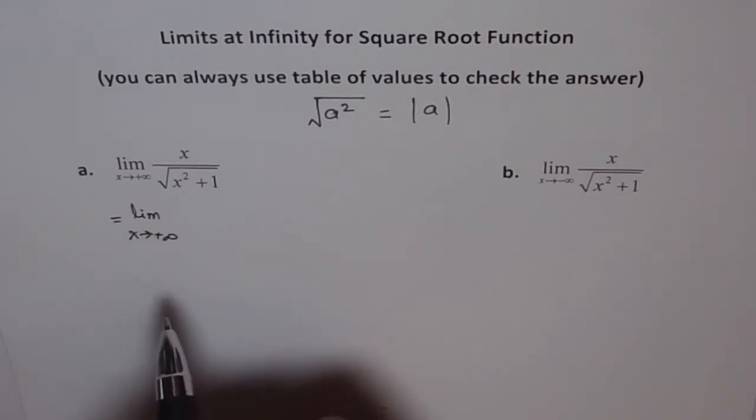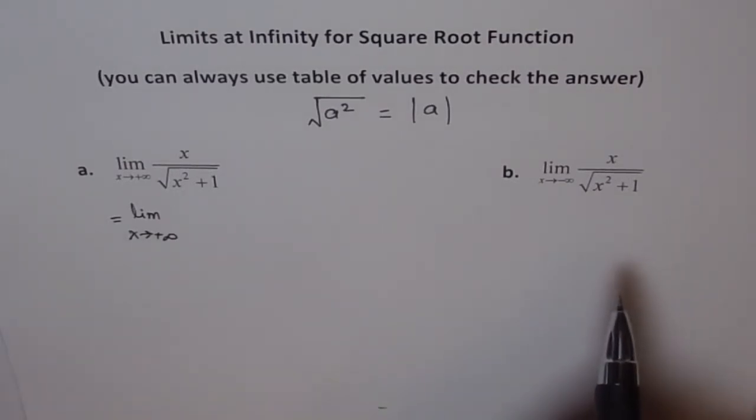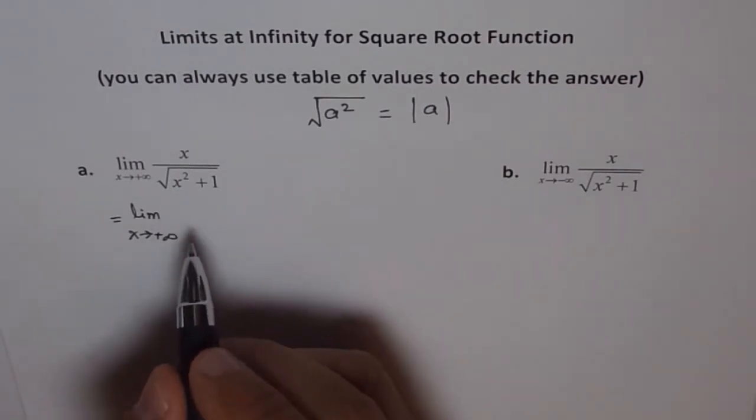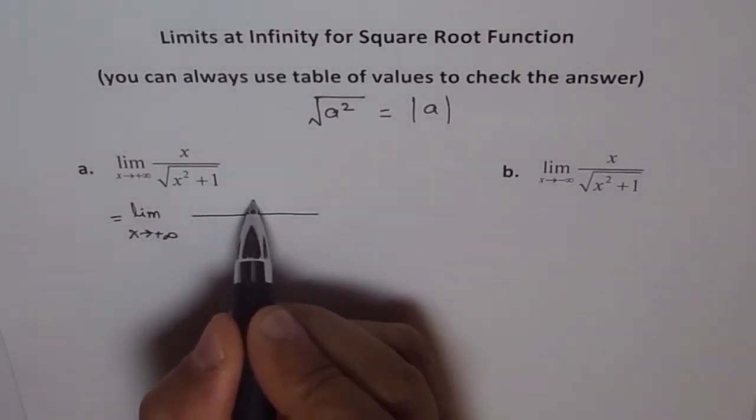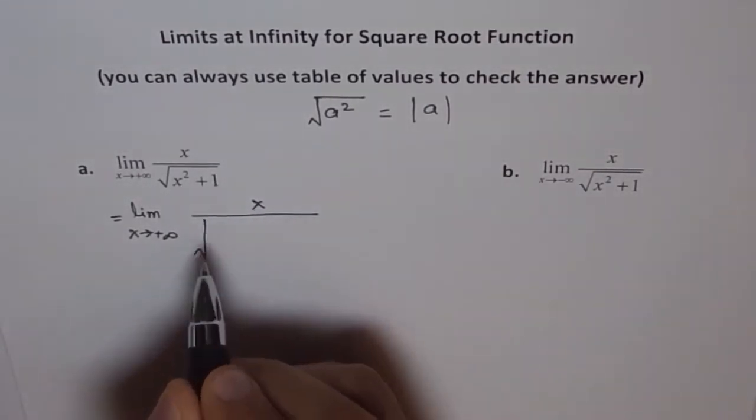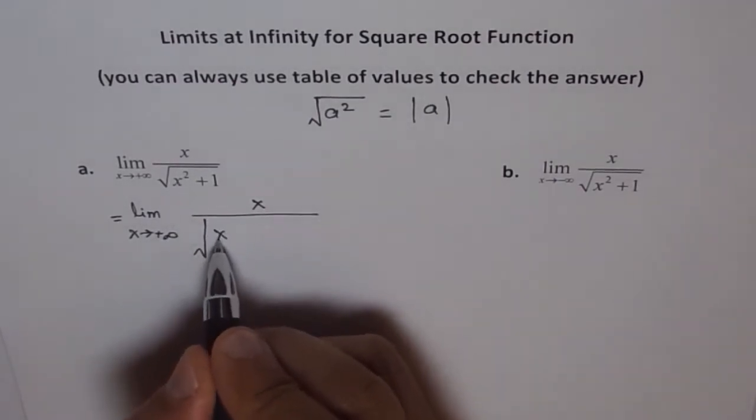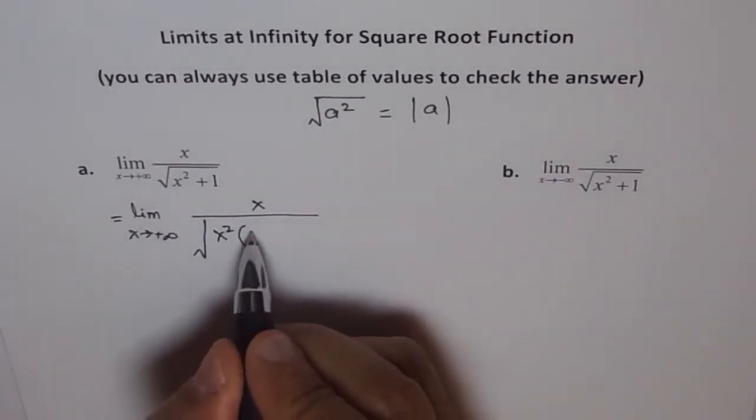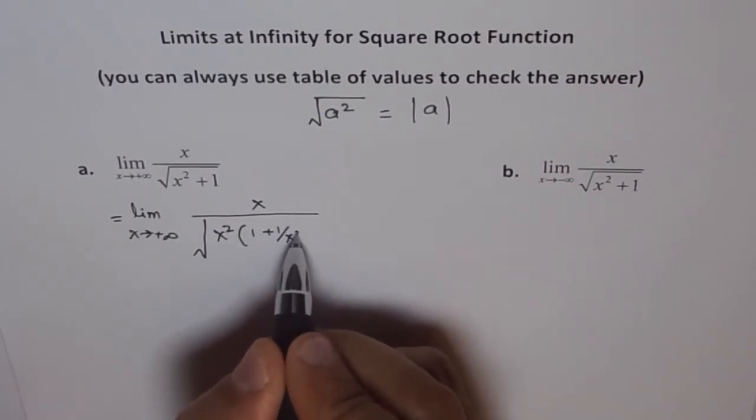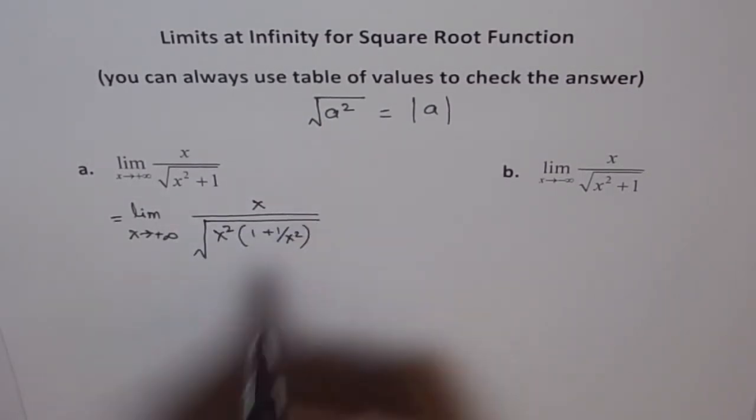So we have x on the top and what we will do is we will factor out x square from here. So if you factor out x square you are left with 1 plus 1 over x square. That's what you get.